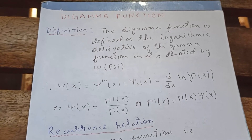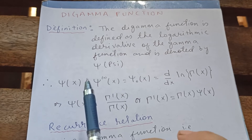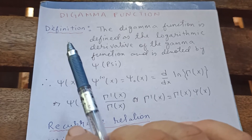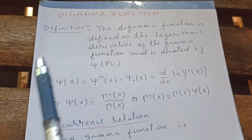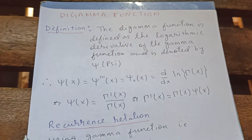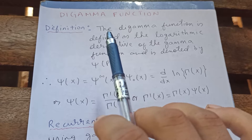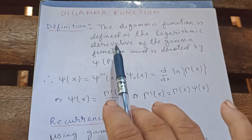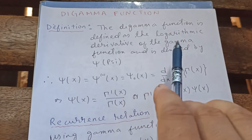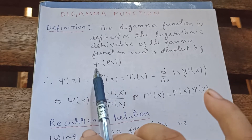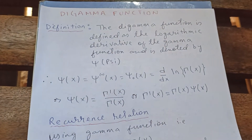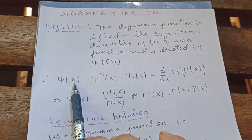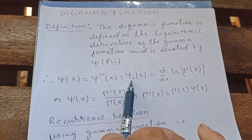Today we are going to introduce a special function called the digamma function. We already talked about the gamma function; now we are going to see the digamma function, and next will be trigamma and then polygamma. The digamma function is defined as the logarithmic derivative of the gamma function and is denoted by psi (ψ), also written as ψ₀(x).